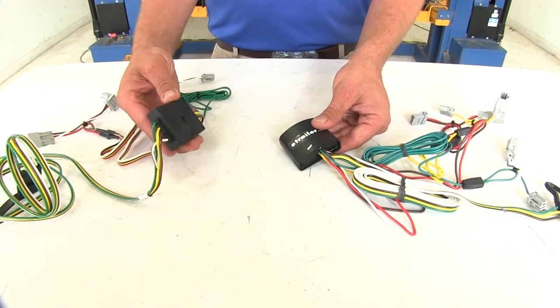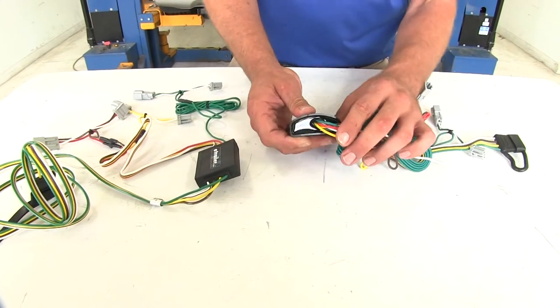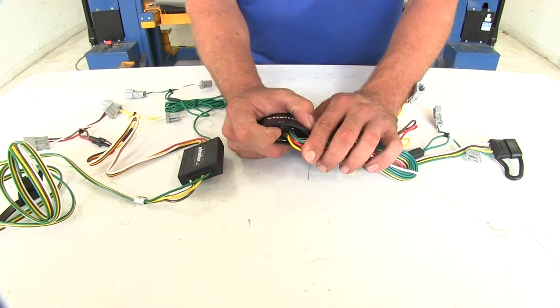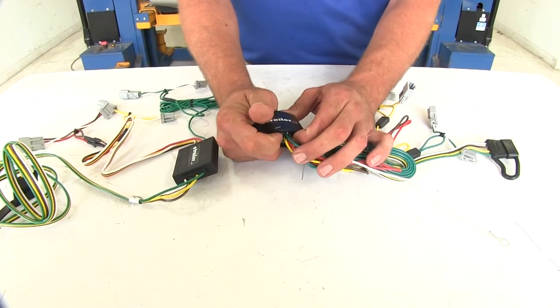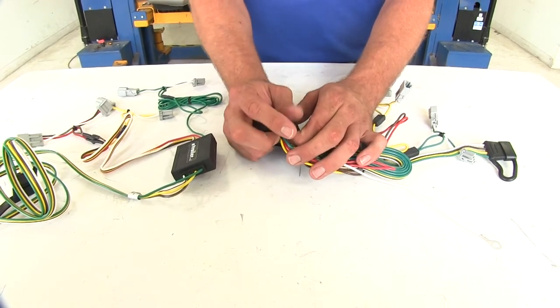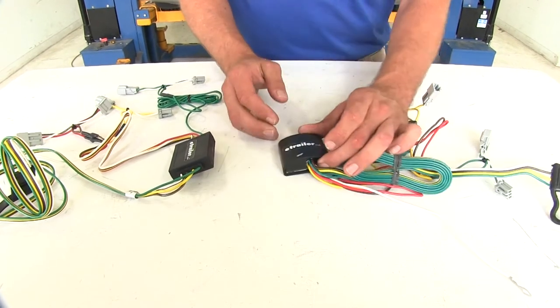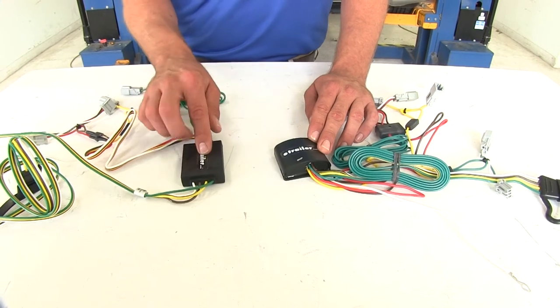While the Curt is encased so all the connections are located inside, we have the same thing from Tekonsha but also they've used an epoxy style rubber filler to go in and around that circuit board. That's really going to protect this from being bounced around as we're on any kind of back roads or anything like that and typically gives us better durability out of the Tekonsha than what we get with the Curt.